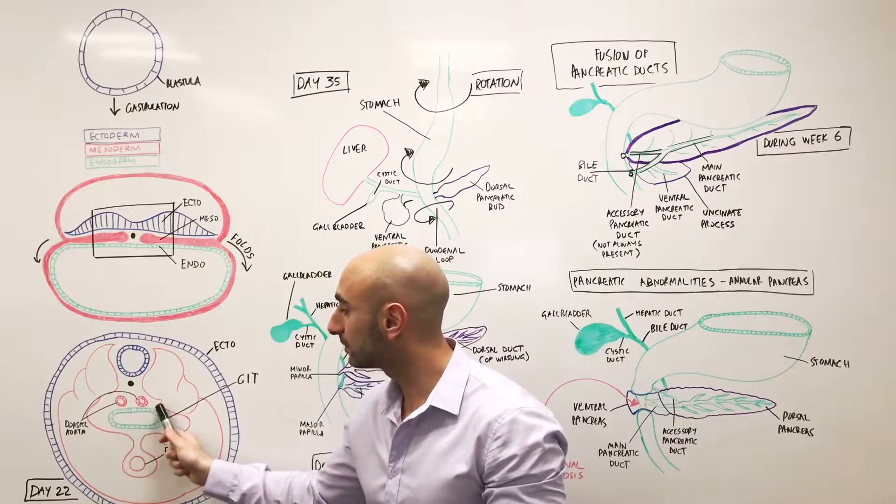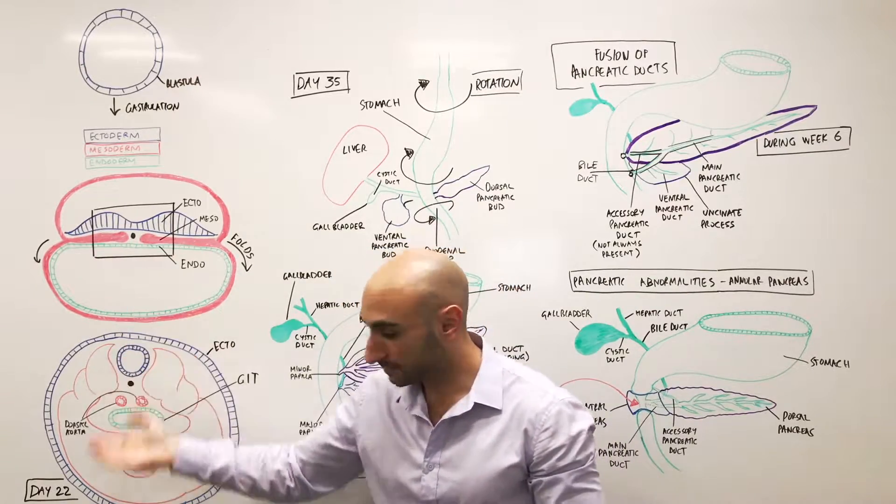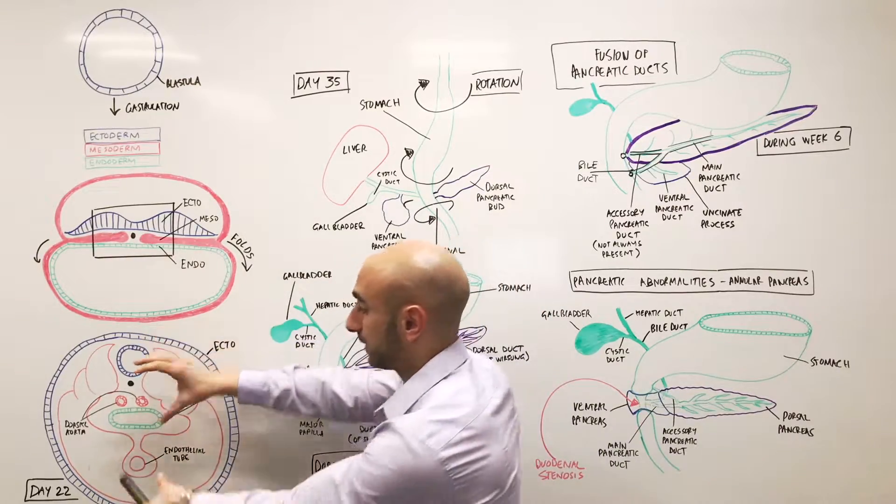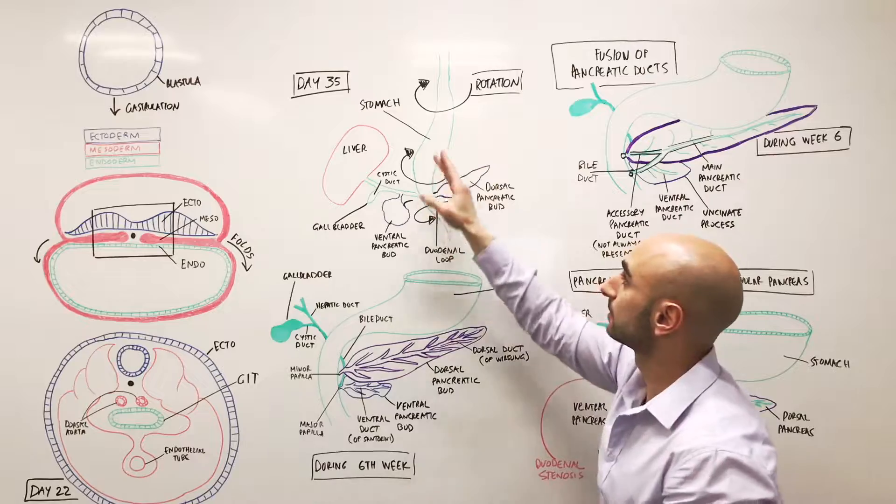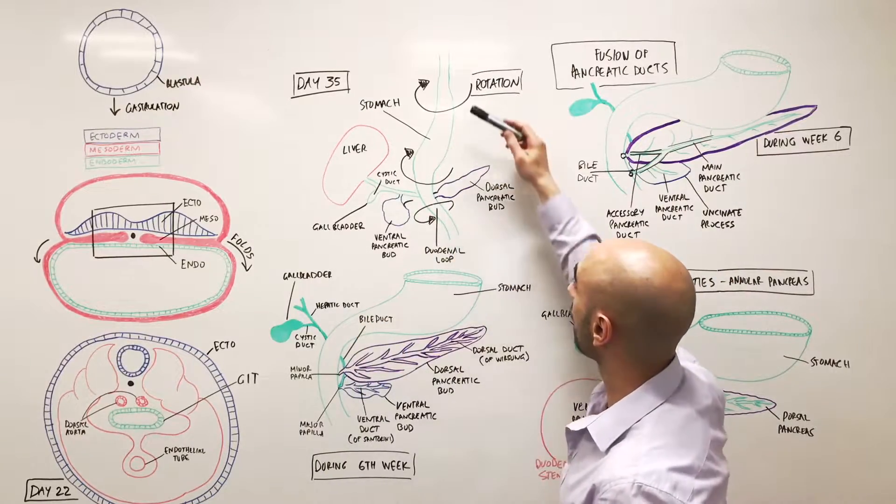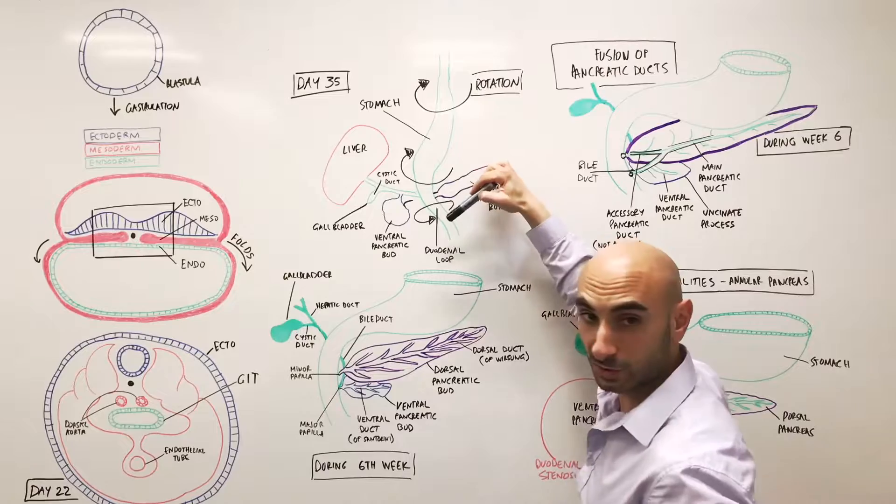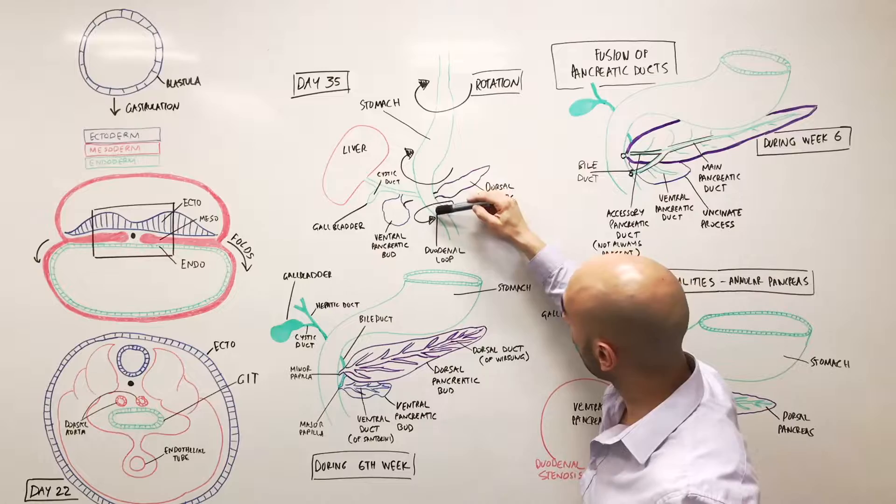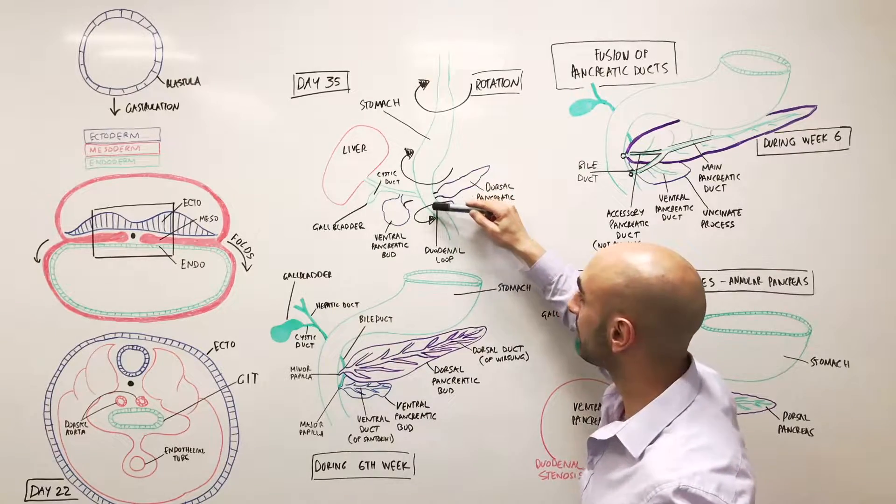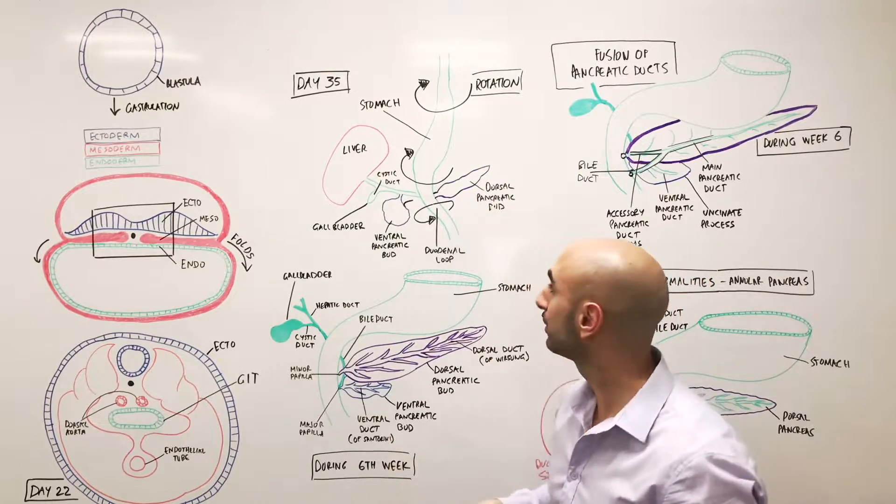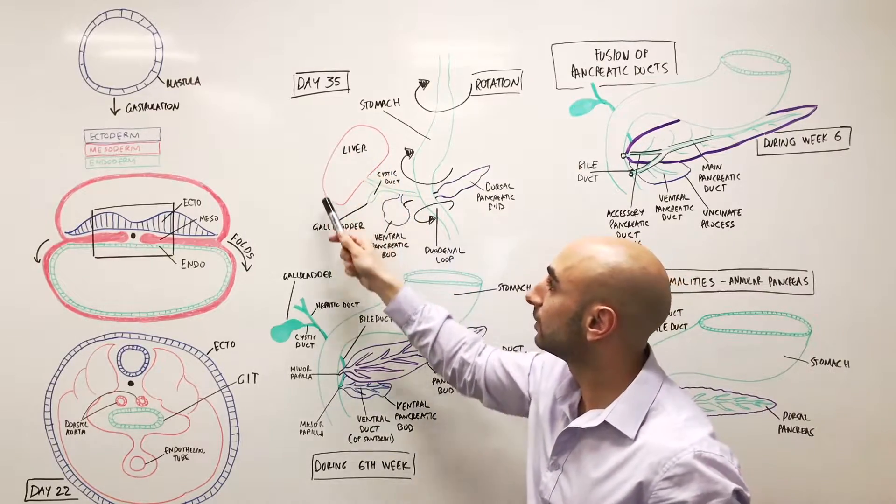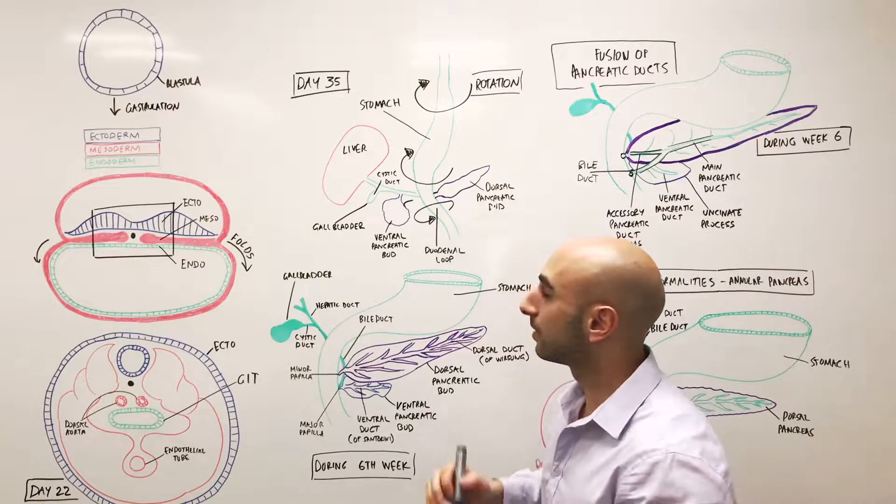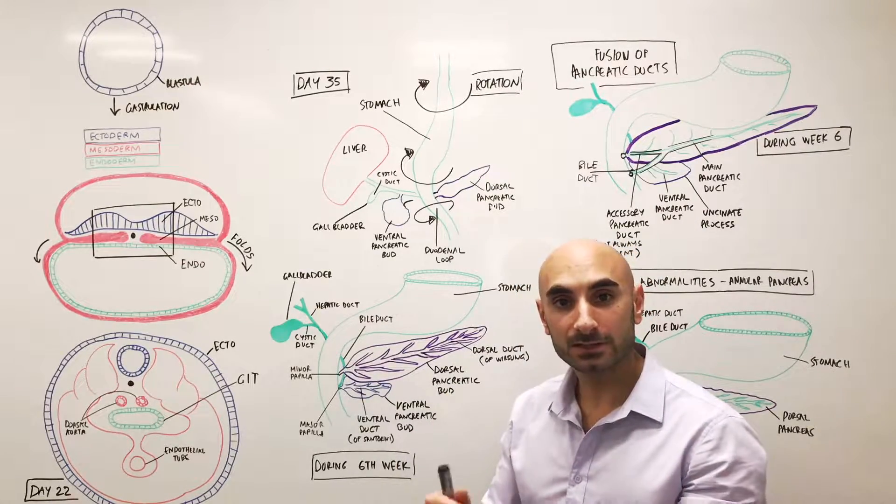But your pancreas is derived from this. And this is a cross section. So if we were to flip it up, just let's flip it up, you'll get this. So this is a coronal view. And over here, we have your GIT in green. And the dilatation is the stomach. And as we go further down, there's the duodenum, which isn't yet in its C shape. We have the liver here in red, although it's not 100% mesoderm. It's made up of endoderm and mesoderm. But embryology of the liver is for another video.